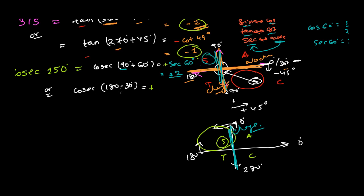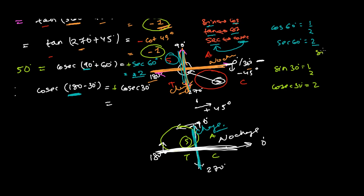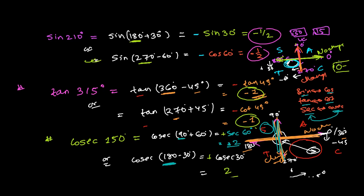Using the alternative 180-basis method: cosec(180 − 30)°. Since we're on the 180-basis line, there is no change in ratio, so cosec stays cosec, giving cosec 30°. Since sine 30° = 1/2, cosec 30° = 2. Both methods confirm cosec 150° = 2. This is how we find any angle between 0 to 360°. Next we'll learn about higher angles — see you in the next video!